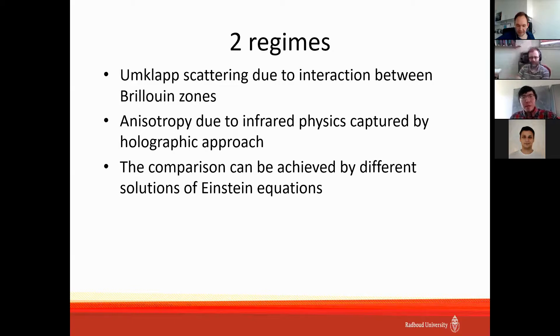We consider only one dimensional perturbation, so we will not obtain exact Fermi arcs because basically this equation is very hard to solve. To show you possible technical problems, these equations Einstein-Maxwell equations and Dirac equations, if we write them into a file, would be around several megabytes just symbolic equations. One regime is Umklapp scattering due to interaction between Brillouin zones captured by exact periodic perturbation, and another is anisotropy due to infrared physics captured by special solutions with implicit broken translation symmetry.